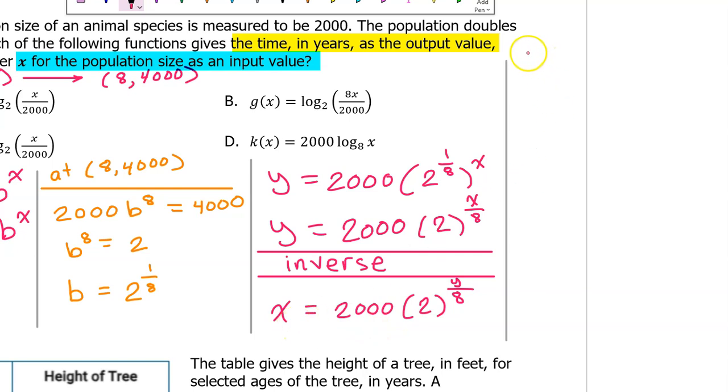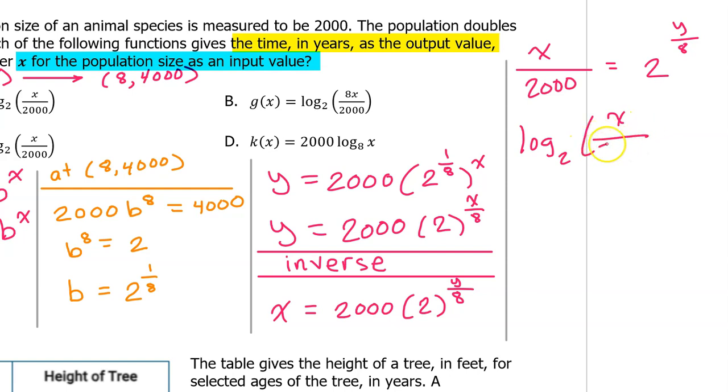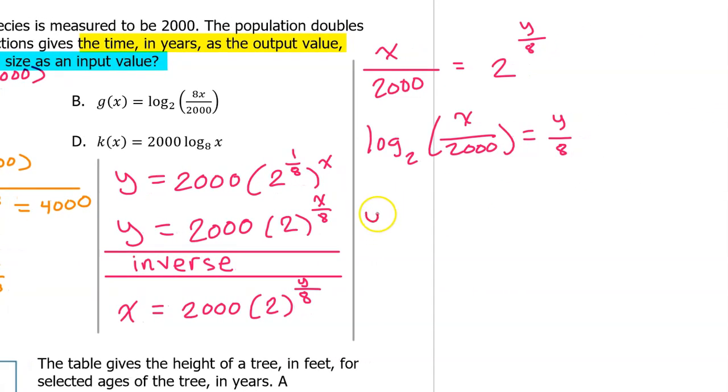Dividing both sides by 2000, we have x over 2000 equals 2 to the y/8 power. We can make the base 2 go away by doing the log base 2 of both sides of the equation. So we will have the log base 2 of x over 2000 equals y over 8. Taking the log base 2 of a base 2 cancels out the base 2 and leaves behind the y over 8. Finally, to get the y by itself, we need to multiply both sides by 8. So I'm going to put the y over here on the left as I do it. Multiplying by 8, we have 8 times the log base 2 of x over 2000.